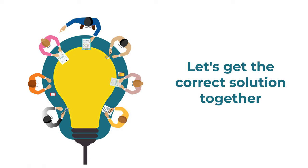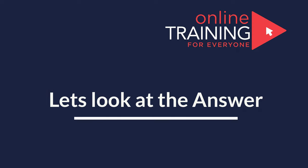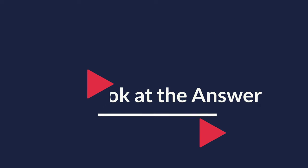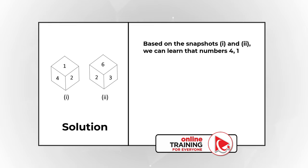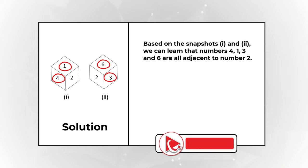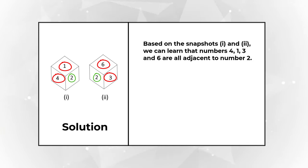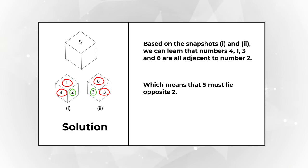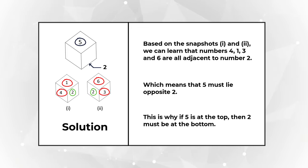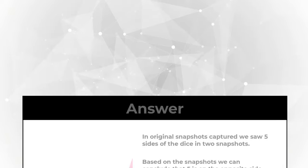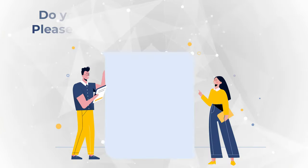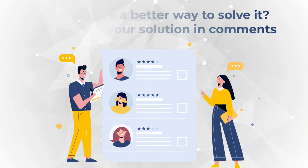Let's move forward and get to the correct solution together. Based on both snapshots, we can learn that numbers 4, 1, 3, and 6 are all adjacent to number 2. Because the dice only has 6 sides and corresponding 6 numbers, based on the two snapshots, we can determine that 5 must lie opposite of number 2. This is why if 5 is at the top, then 2 must be at the bottom. Please share your thoughts and the way you solved this challenge in the comments.